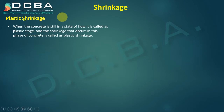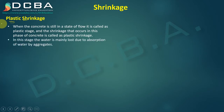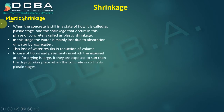Shrinkage happens because of the loss of water. In the plastic stage, water can be lost when aggregates absorb the water. The water required to keep concrete fresh is absorbed by the aggregates, causing loss of water and shrinkage. Another cause is when the exposed area is very large — for example, concreting slabs during the daytime. Slabs have a very large exposed area, so if exposed to sun, water dries up much faster, causing volume reduction and shrinkage.